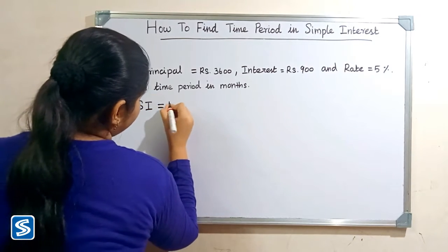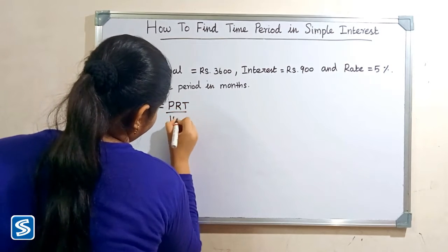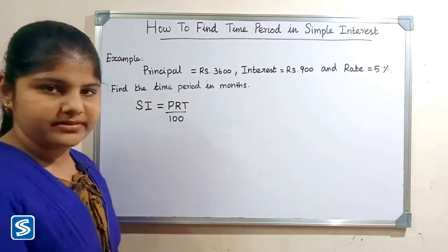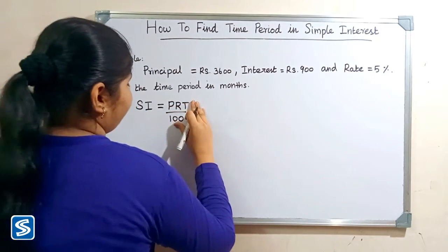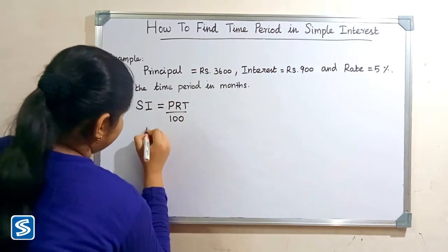We already know that simple interest is equal to PRT by 100. So from the formula we got the formula for finding time period T is equal to simple interest multiply 100 divided by P multiplied R.